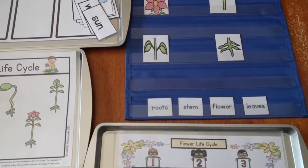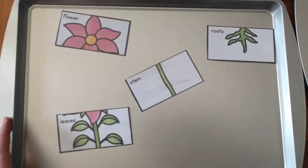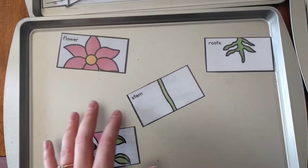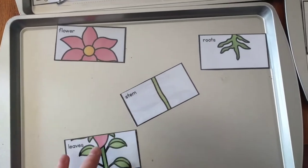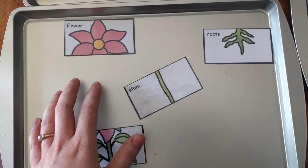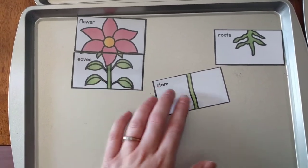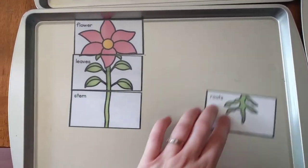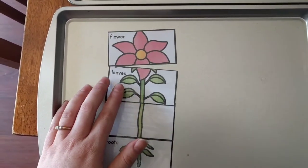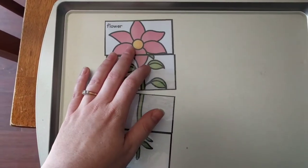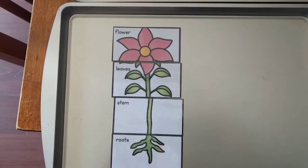So let's just get started. This one is all about plants and flowers. The first activity is really simple - it's this flower, and they're going to match up the parts to make a flower. So these are the parts of a flower: we have flower, we have leaves, we have stem, and we have roots. Really simple - matching them up and talking about the words and what each part of the flower is called.